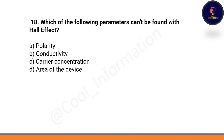Which of the following parameters cannot be found with the Hall effect? Option A: polarity. Option B: conductivity. Option C: carrier concentration. Option D: area of the device. Correct option is D — area of the device cannot be found with the Hall effect.